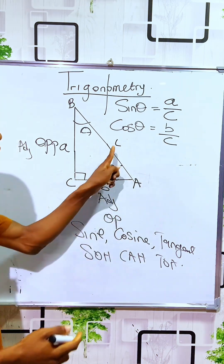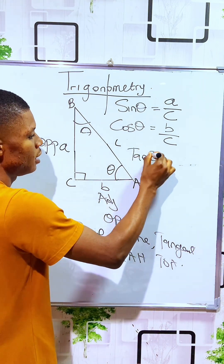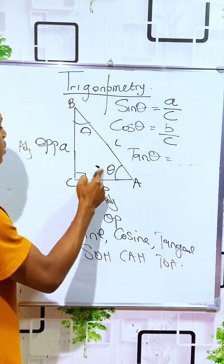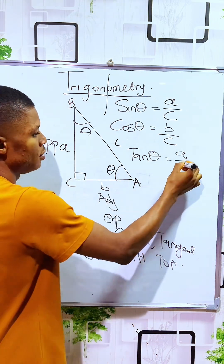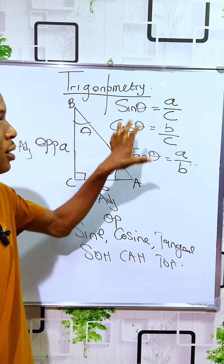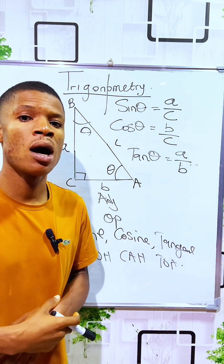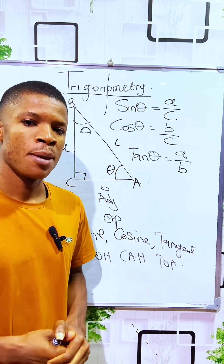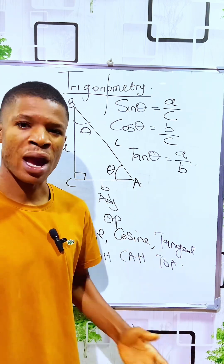Tangent theta is the ratio of the opposite over the adjacent. The opposite is side A and the adjacent is side B, so tangent theta equals A over B. These are the basic three trigonometrical ratios. We also have their reciprocals — cosecant, secant, and cotangent — but these are the fundamental three.